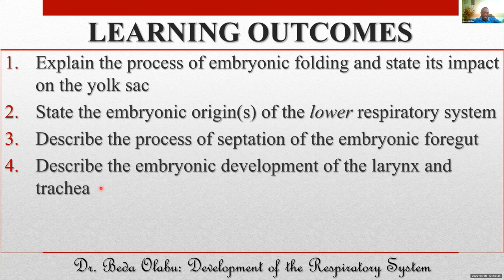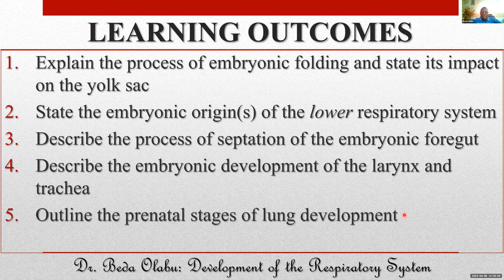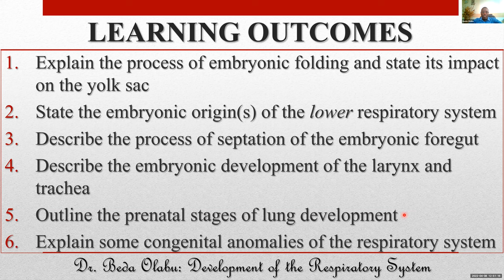After that we will talk about the process of septation of the primordial gut tube — that foregut, midgut, and hindgut — focusing on how the foregut becomes split into the digestive and respiratory systems. Then we will discuss how the larynx develops, how the trachea develops, the stages of fetal lung development both prenatally and postnatally, and finally some congenital malformations that affect the respiratory system.